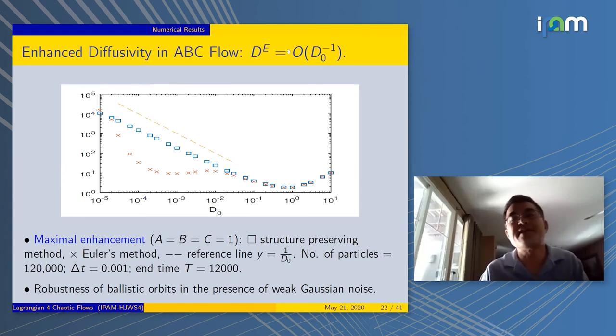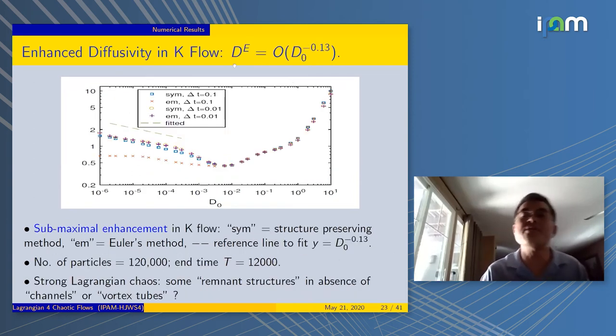This result is known before from physics papers. We recovered it here. One reason is that the ballistic trajectories we talked about induce a tube-like structure, and that helps the maximum enhancement. Now let's go to the Kolmogorov flow, and you do the same, and you find out that the slope is much smaller. Now it's 0.13.